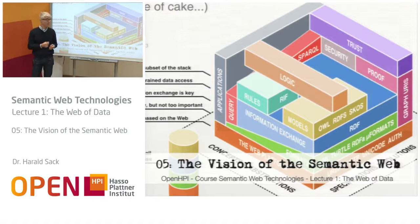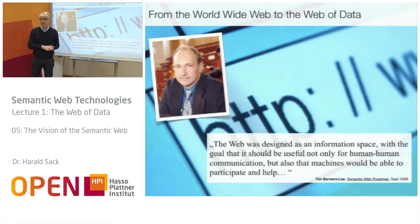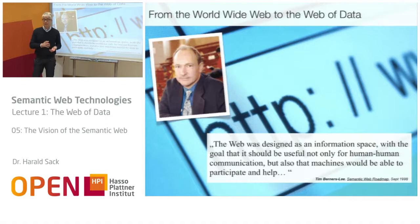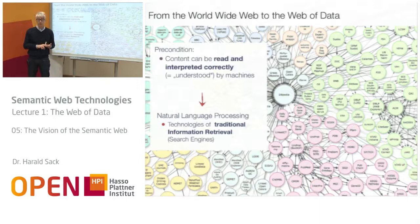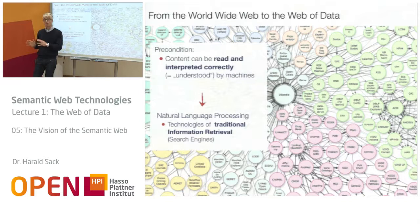The semantic web is a term that came up in the end of the 90s, and it was proposed by Sir Tim Berners-Lee, who is also the inventor — in quotation marks — of the World Wide Web. He said already in 1998 that the web was originally designed as an information space with a goal that it should be useful not only for human-human communication, but also that machines would be able to participate and help. This would only be possible if the content of the information can be read and interpreted correctly — meaning it can be understood by machines.